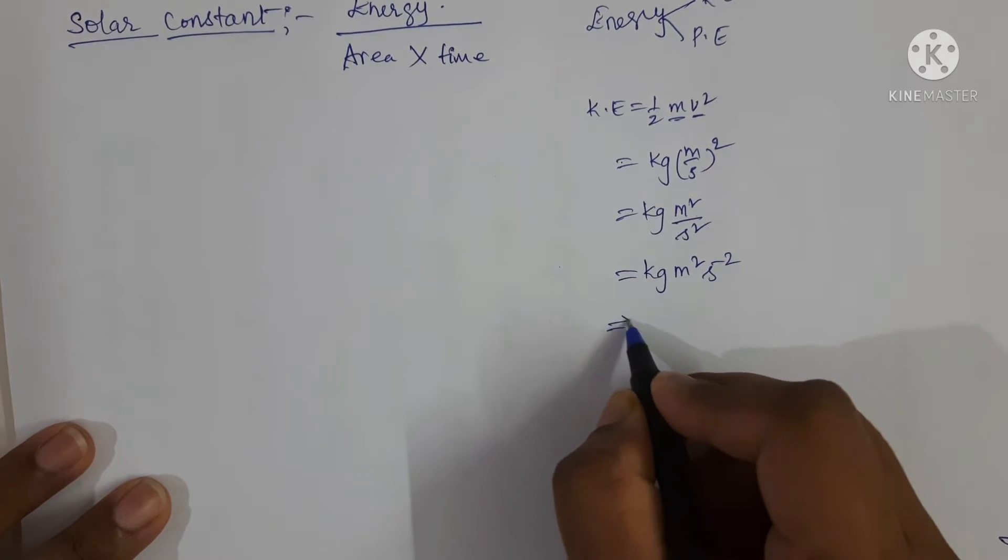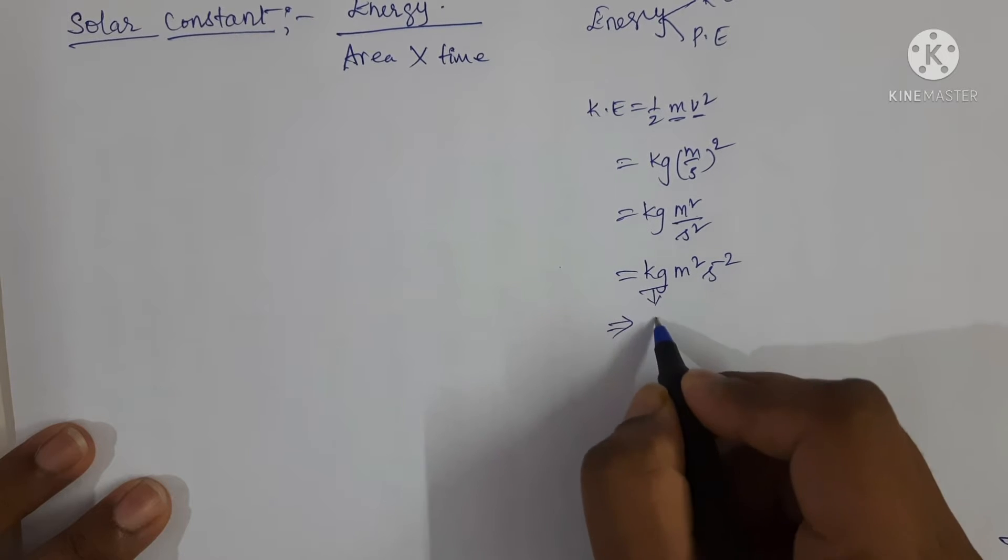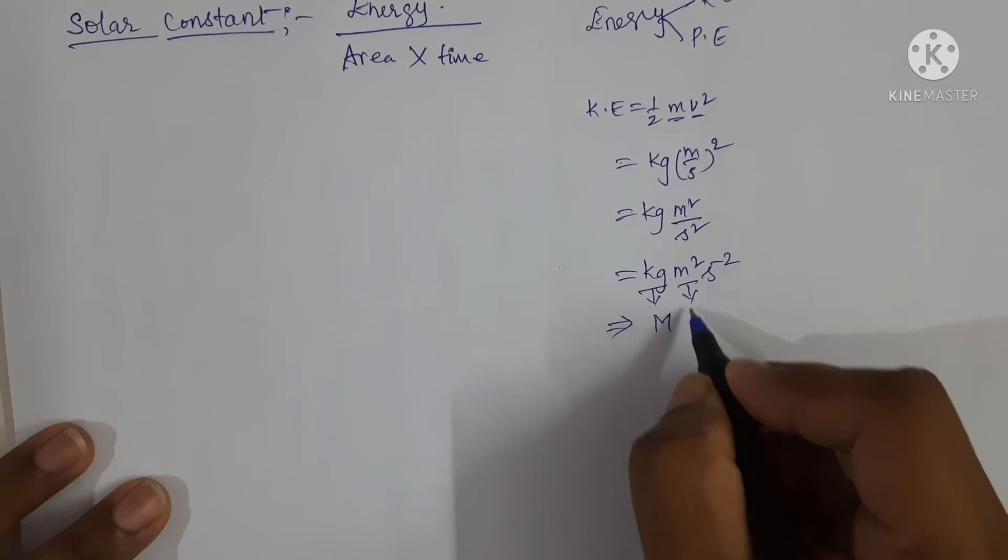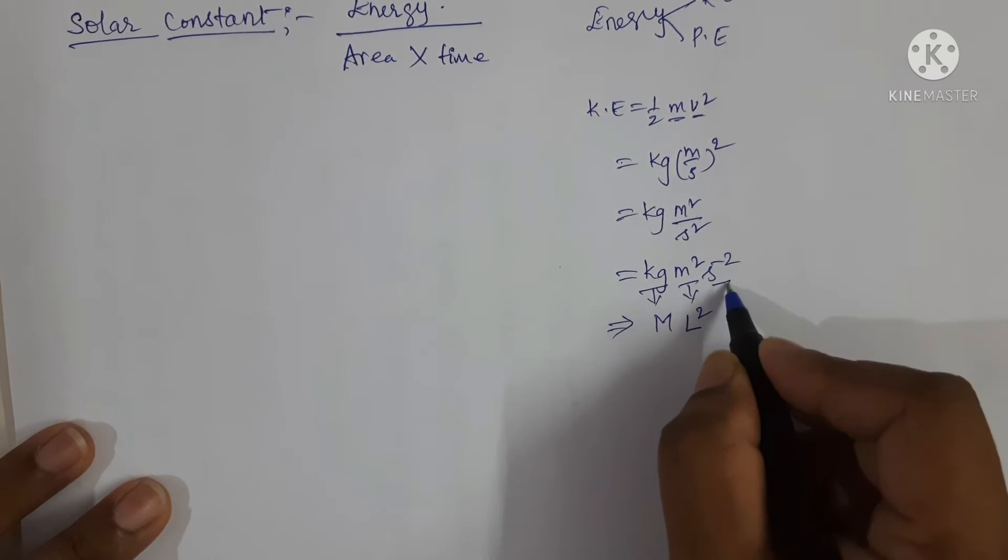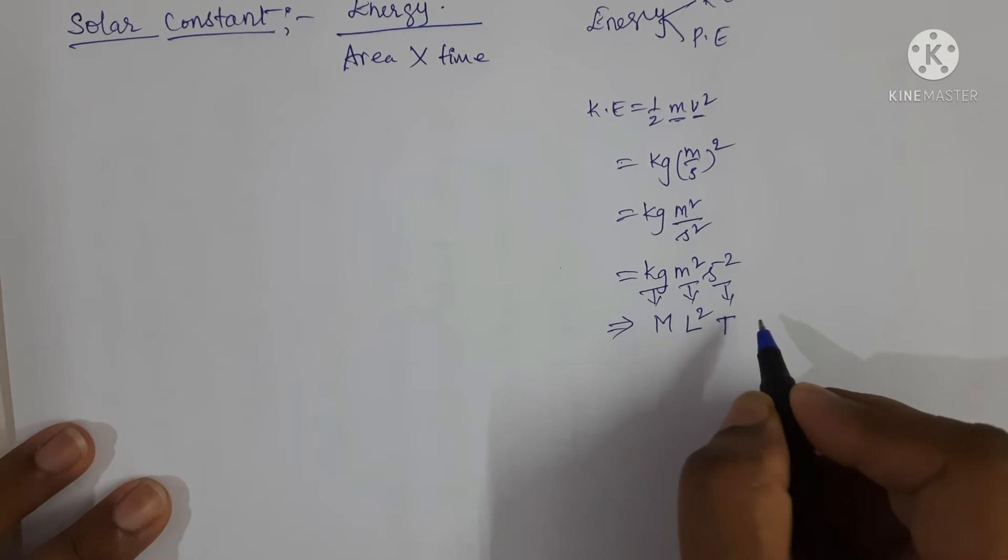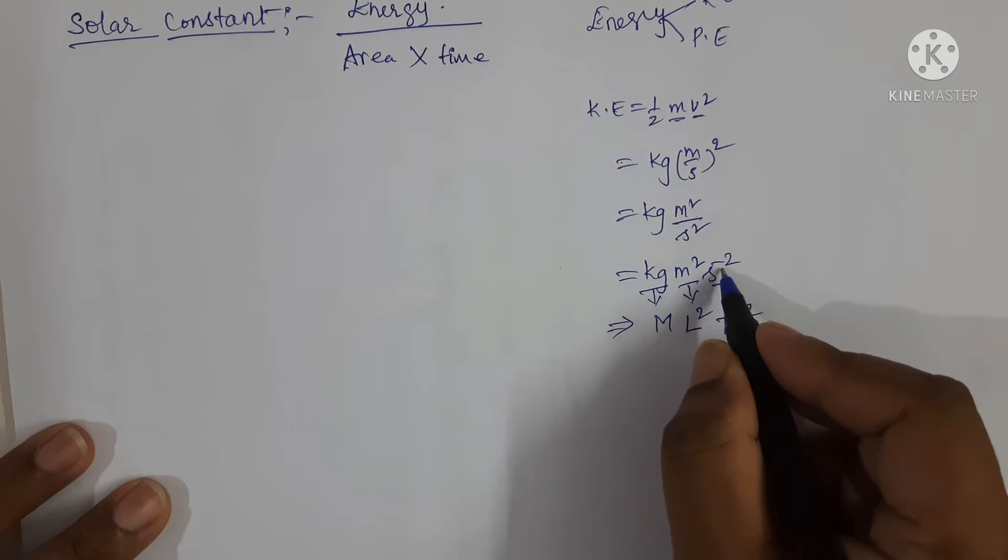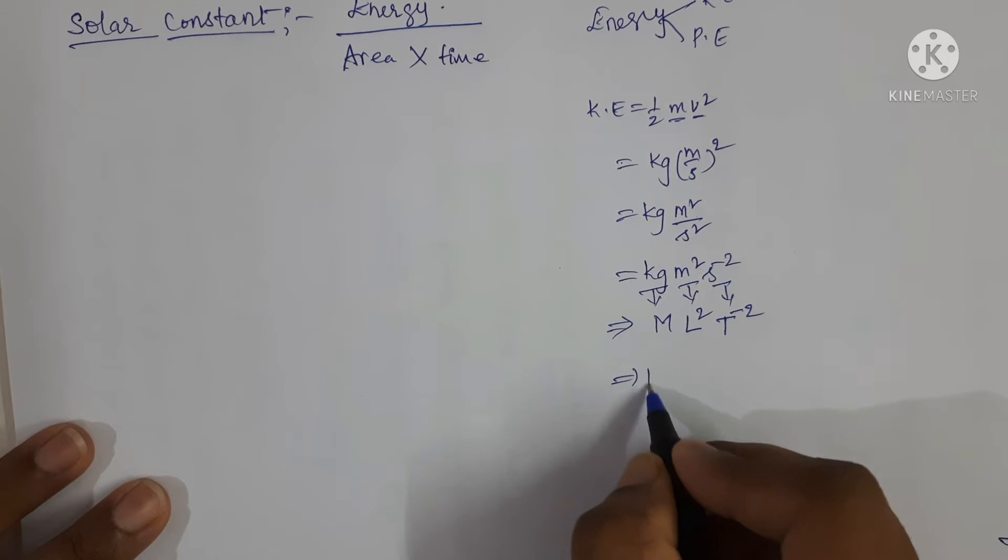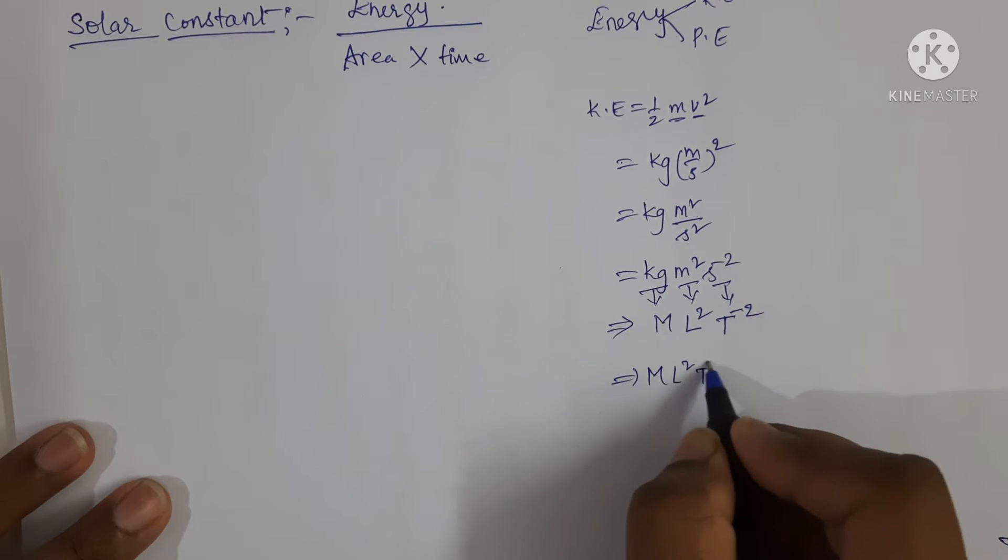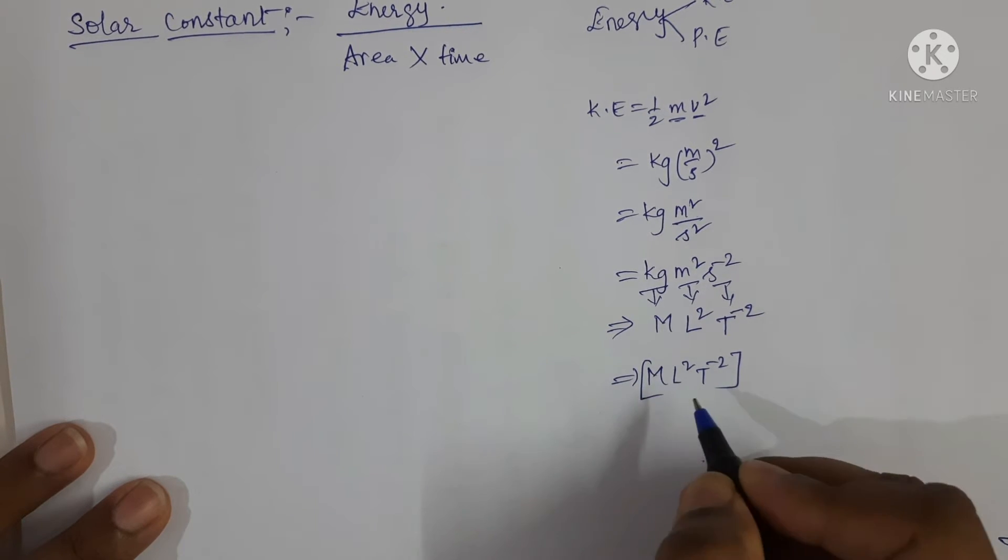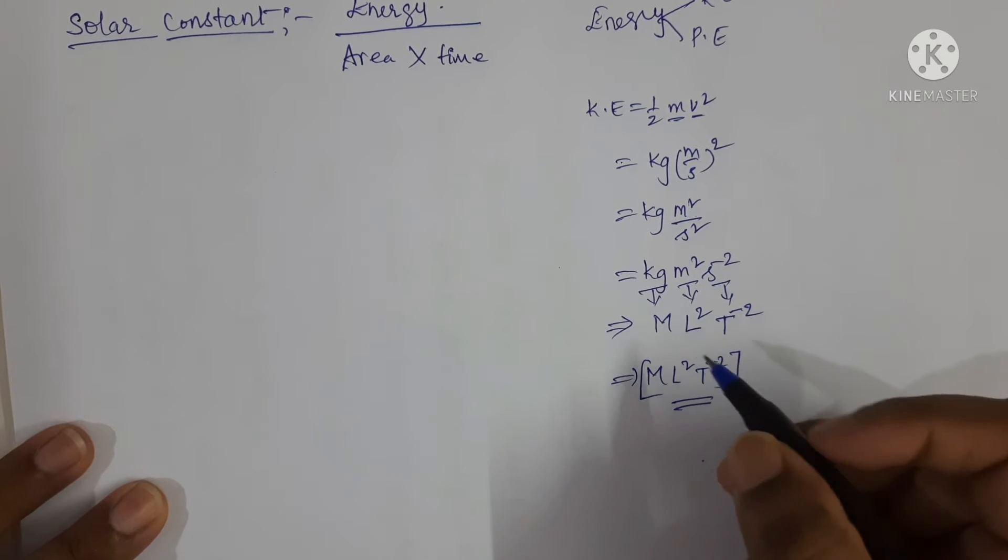s to the power of minus 2. Now write the dimensions: kg is expressed in terms of capital M, meter is expressed in terms of L, so L square. Second is expressed in terms of capital T, so T power minus 2. Again I am writing M L square T power minus 2. This is the dimensional formula for kinetic energy.